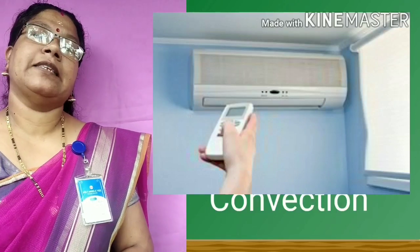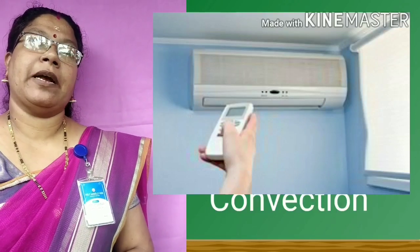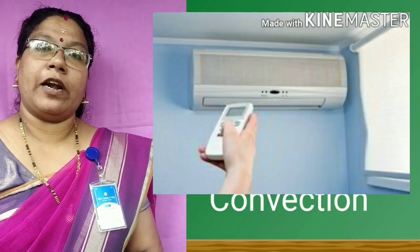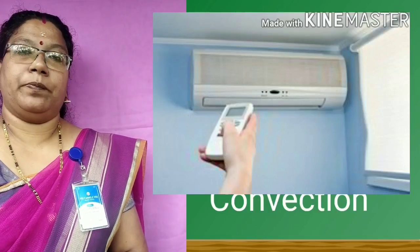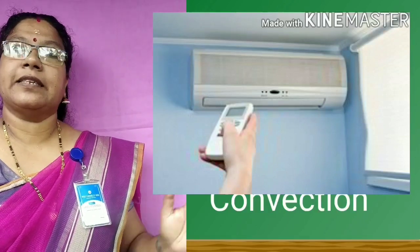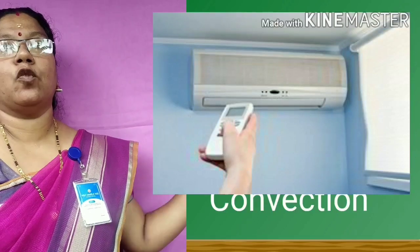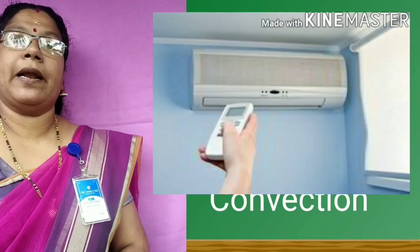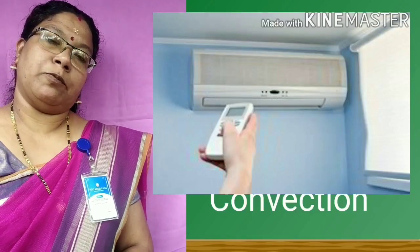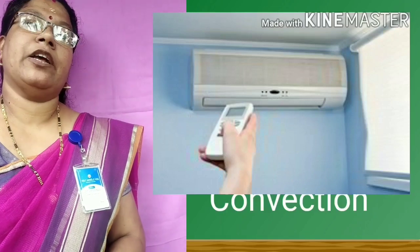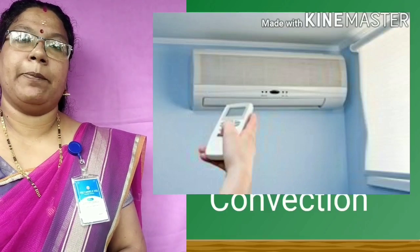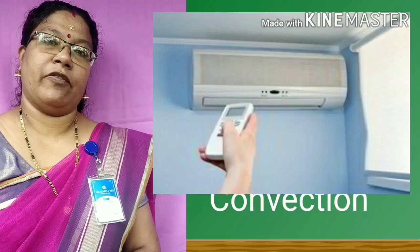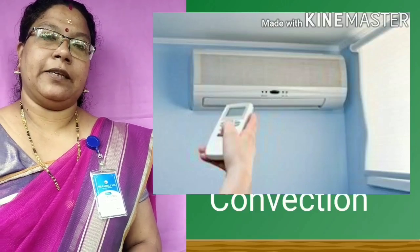When the hot air rises up to the premises of the AC, that hot air also becomes cooled. This convection current moves on — cool and hot air coming up and down continuously — and the room temperature becomes lower. This is the working of an AC.